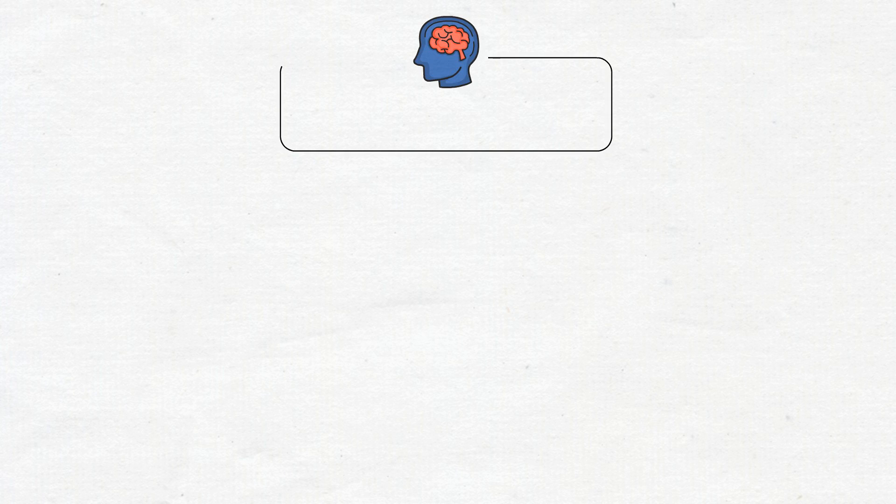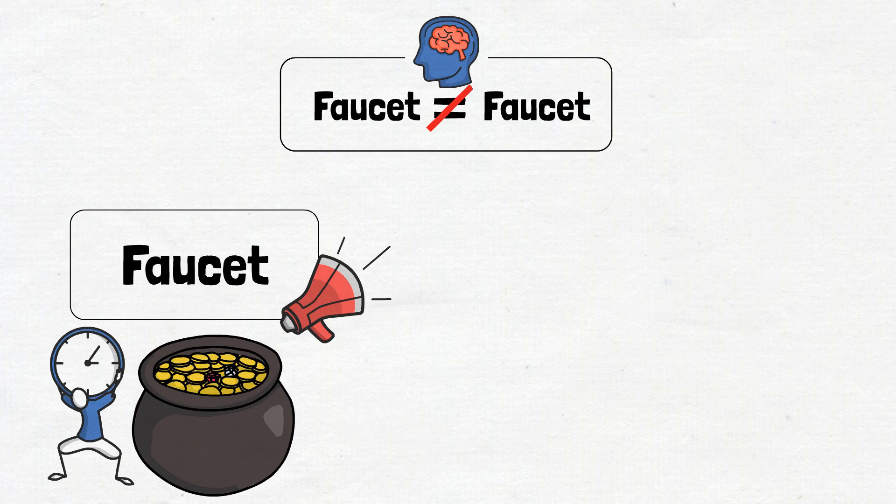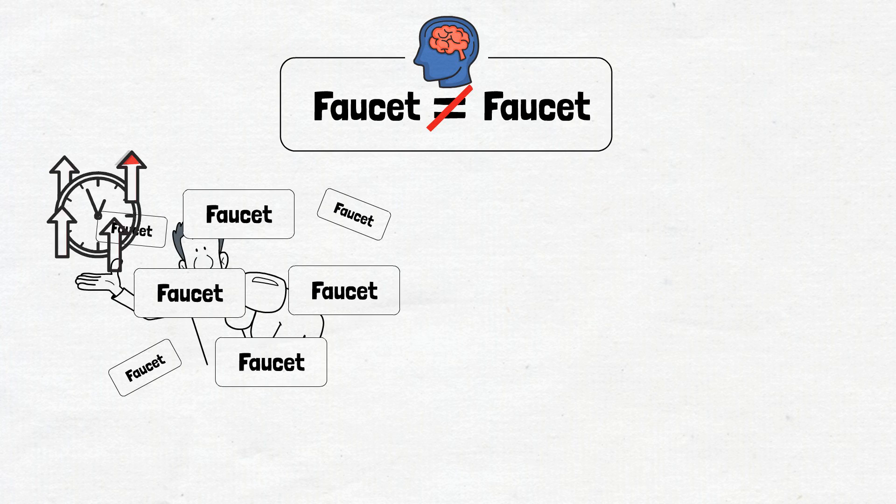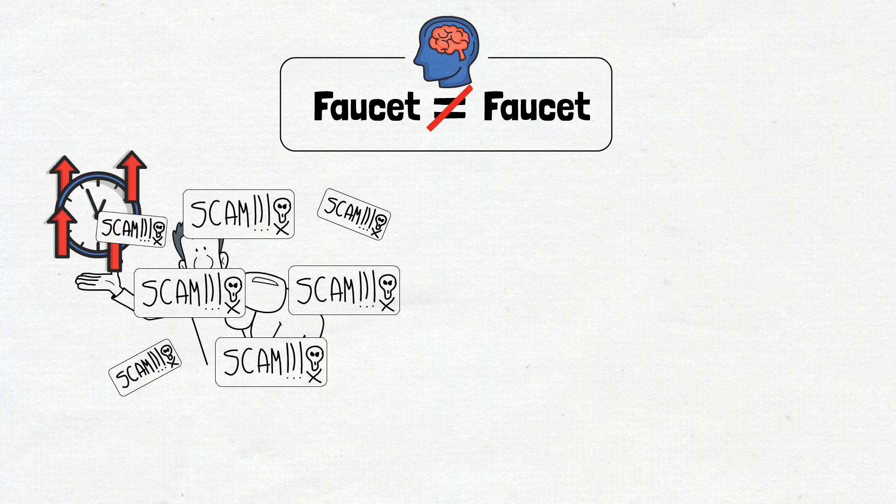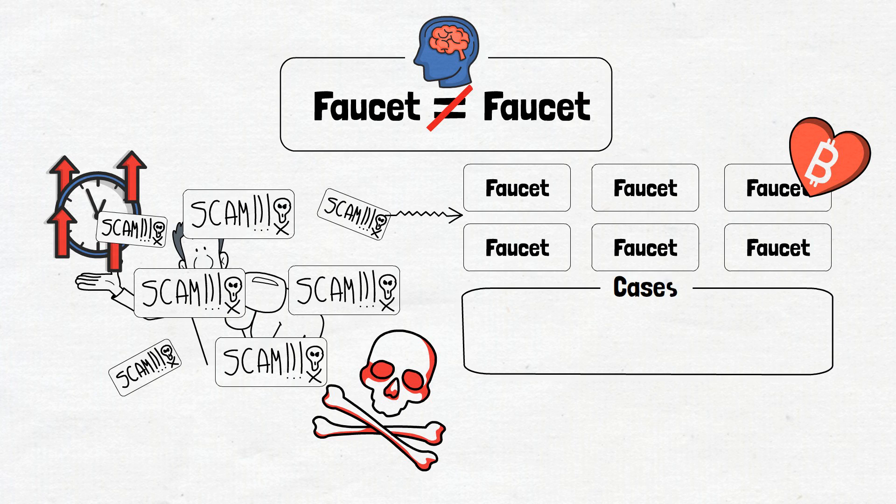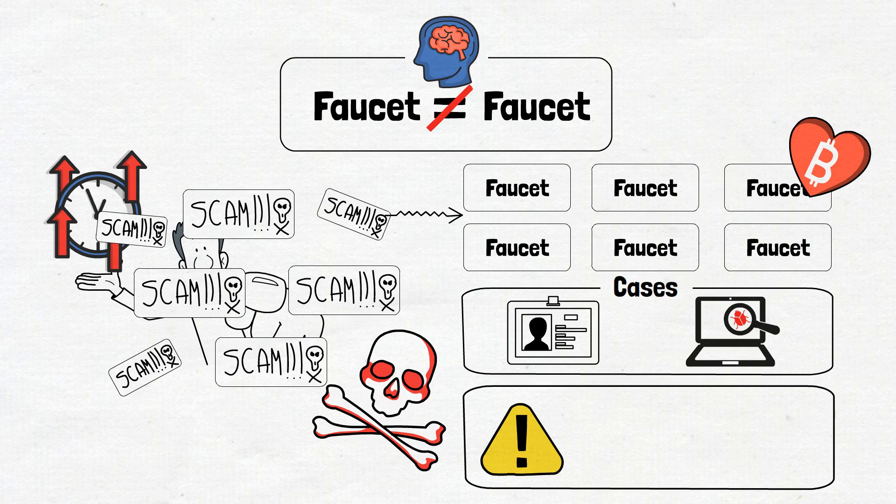Another thing to keep in mind is that not all faucets are created equal. Some might promise big rewards but end up being a waste of time, while others might be safe and reliable. If you just engage with any faucet out there, you're basically wasting your time and risking being exposed to scams. You see, while most faucets are harmless and just want to spread the crypto love, some can be a bit shady. There have been cases of faucets being used to gather personal information or even install harmful software on your device. That's why it's super important to stay cautious, use antivirus software, and only interact with faucets that have a good reputation.